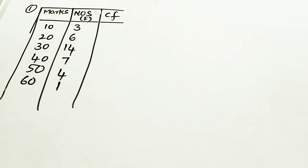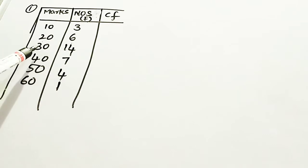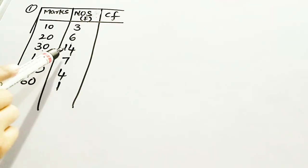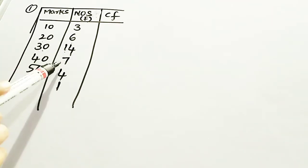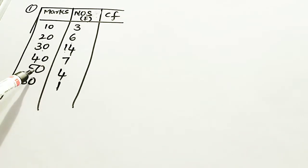Let us solve one problem related to discrete series. The marks are 10, 20, 30, 40, 50, and 60. The number of students who scored 10 is 3, who scored 20 is 6, who scored 30 is 14, who scored 40 is 7, who scored 50 is 4, and who scored 60 is 1.